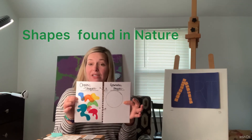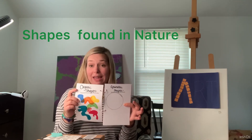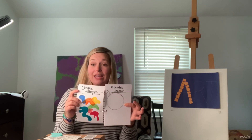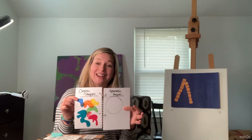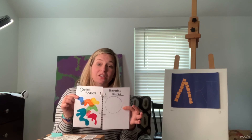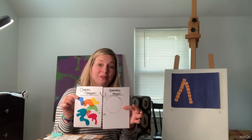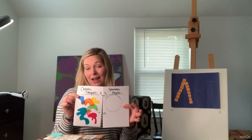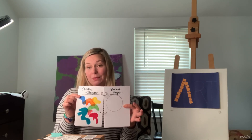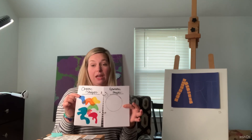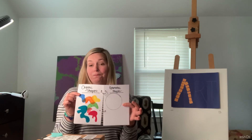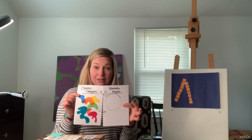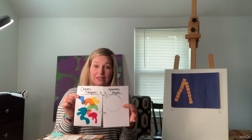I have two pages. One says organic shapes. Organic shapes are shapes found in nature — shapes that you might find if you are taking a walk outside, shapes that water droplets make, living things. I drew a variety of organic shapes.